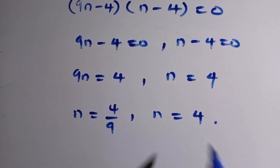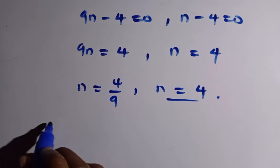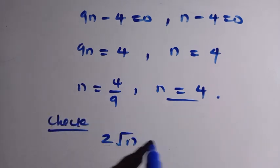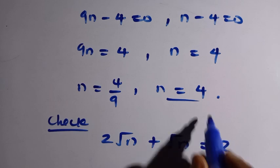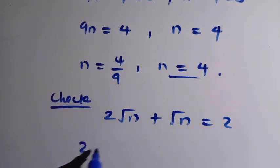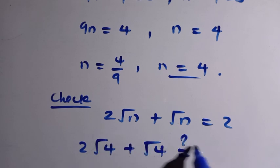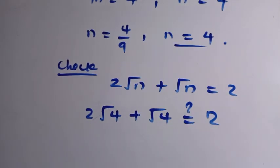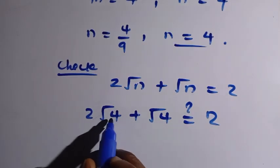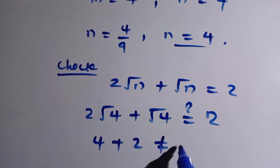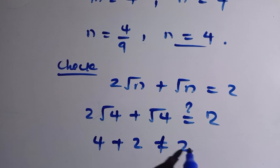Let's verify by testing n equals 4: the equation gives 2√4 + √4 = 2×2 + 2 = 4 + 2 = 6, which does not equal 2. So n equals 4 does not satisfy the equation, meaning n equals 4/9 is the valid solution.